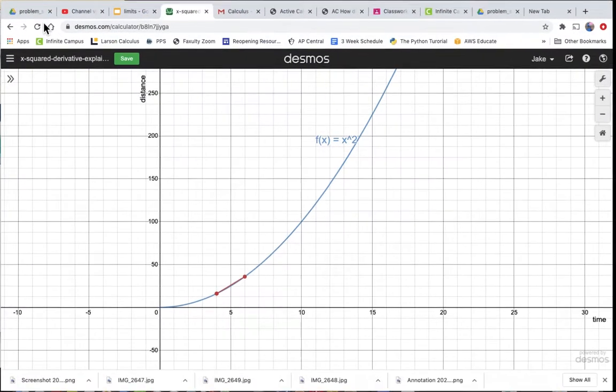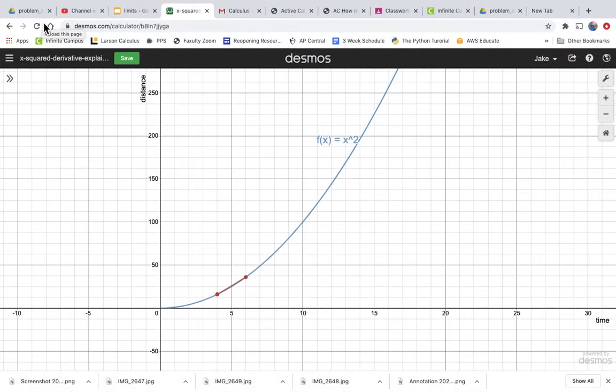Hi Calculus. We are well on our way to deriving a formula for instantaneous velocity, and we will do it using the position function f(x) = x². We've been talking about average velocity, so imagine we're trying to